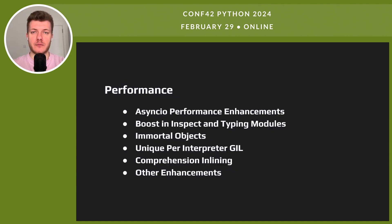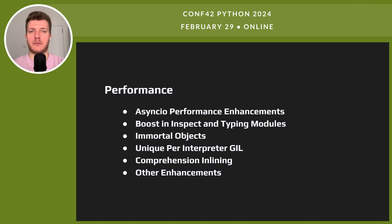Python 3.12 brings exciting performance boosts. First up, asyncio is faster — that's great for async programming. The inspect and typing modules are quicker now. We have immortal objects, which streamline memory management. There is a new GIL strategy — unique per interpreter. Comprehension inlining speeds up list and dict creations. And many more enhancements under the hood.